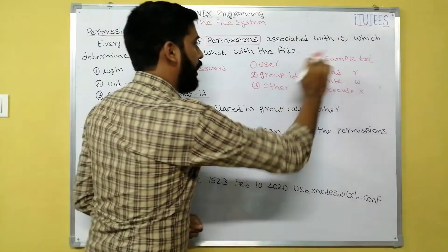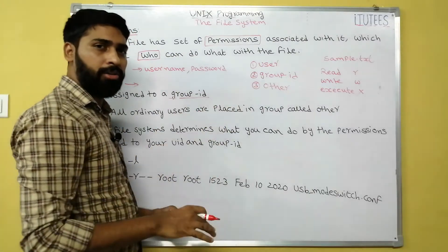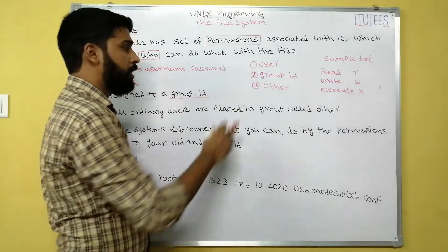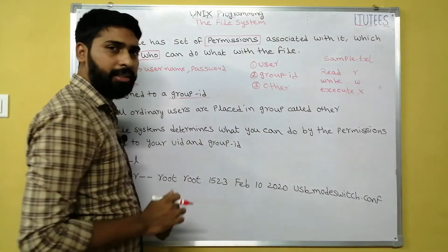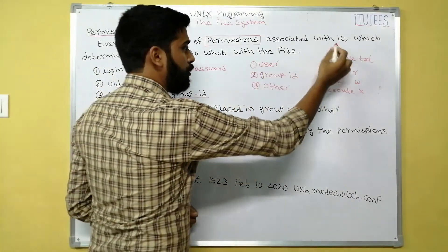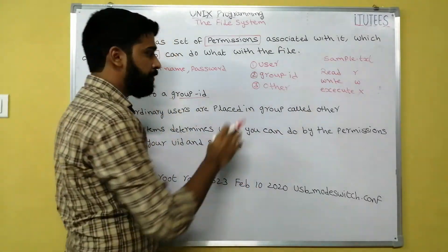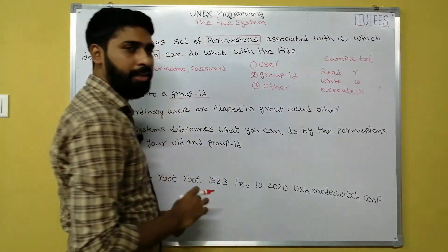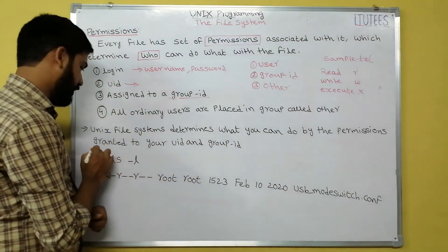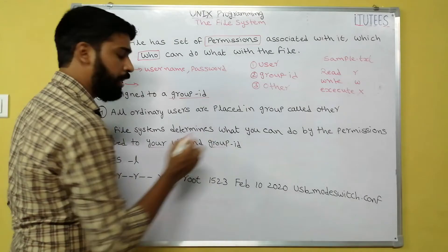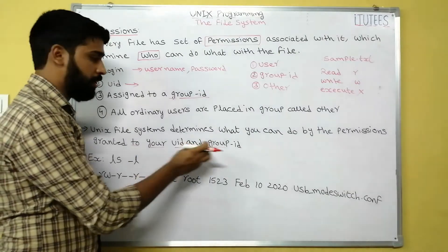When you log into the system you belong to a user ID and a group ID, and all remaining people are treated as others. The Unix file system determines what you can do by the permissions granted to your UID and group ID. UID means user ID, and group ID means a set of similar user IDs grouped together.